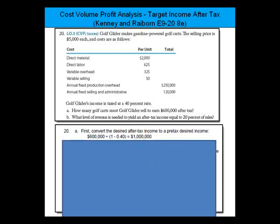Remember that if some number times 1 minus the tax rate equals an answer, you can take the answer and divide it by 1 minus the tax rate, and that will tell you what number you started with. So if we take $600,000 and divide it by 0.6 — which is 1 minus the tax rate of 40% — the desired after-tax income on a pre-tax basis is $1,000,000.